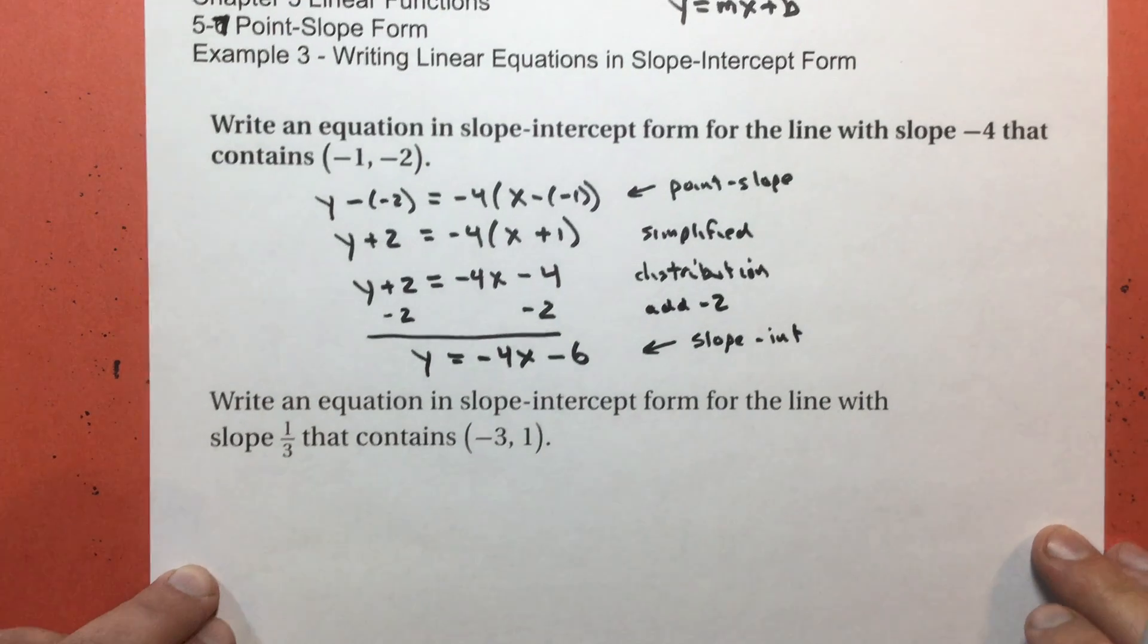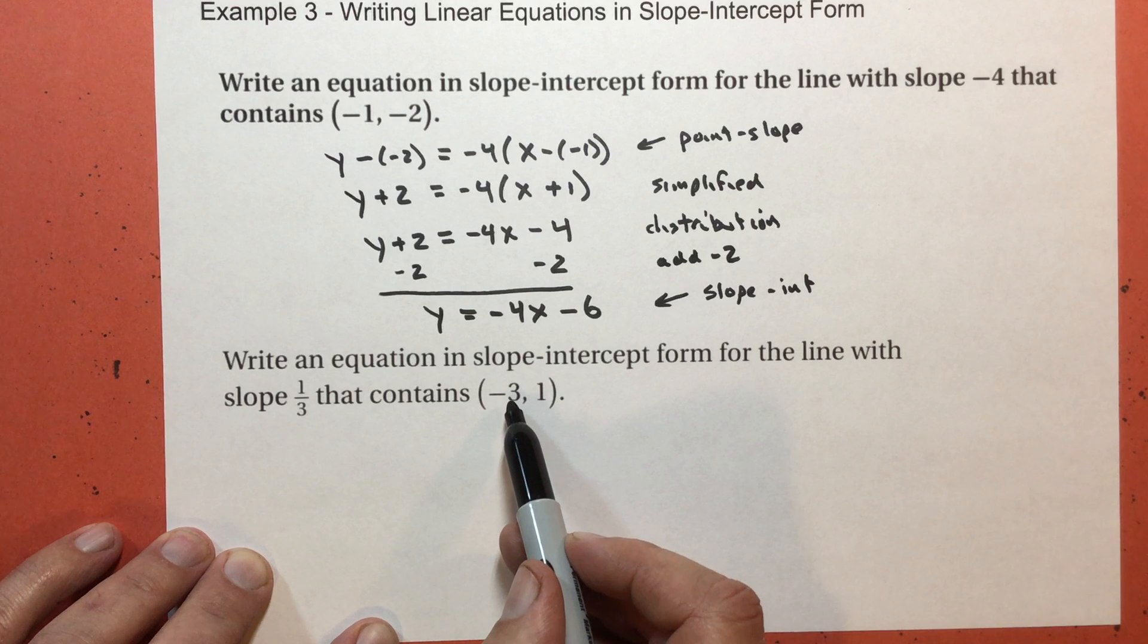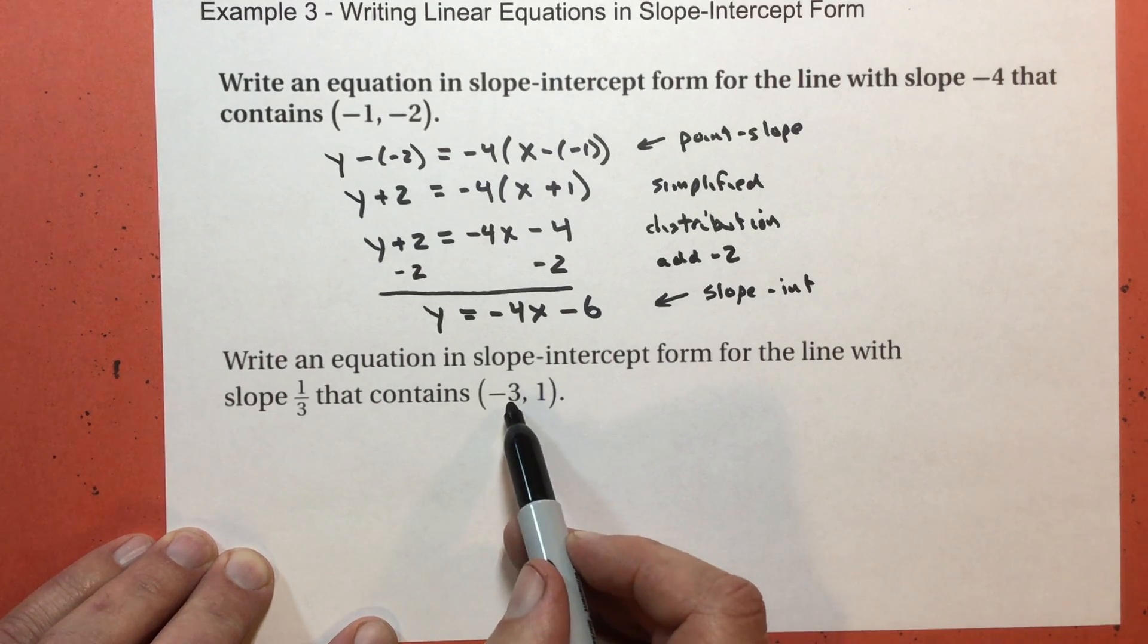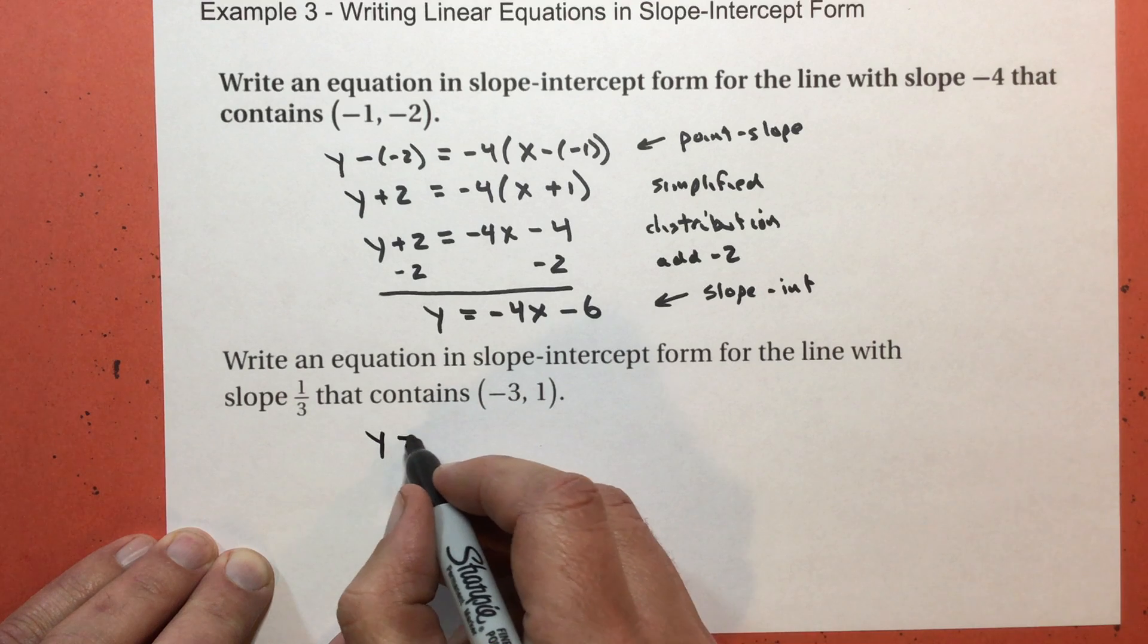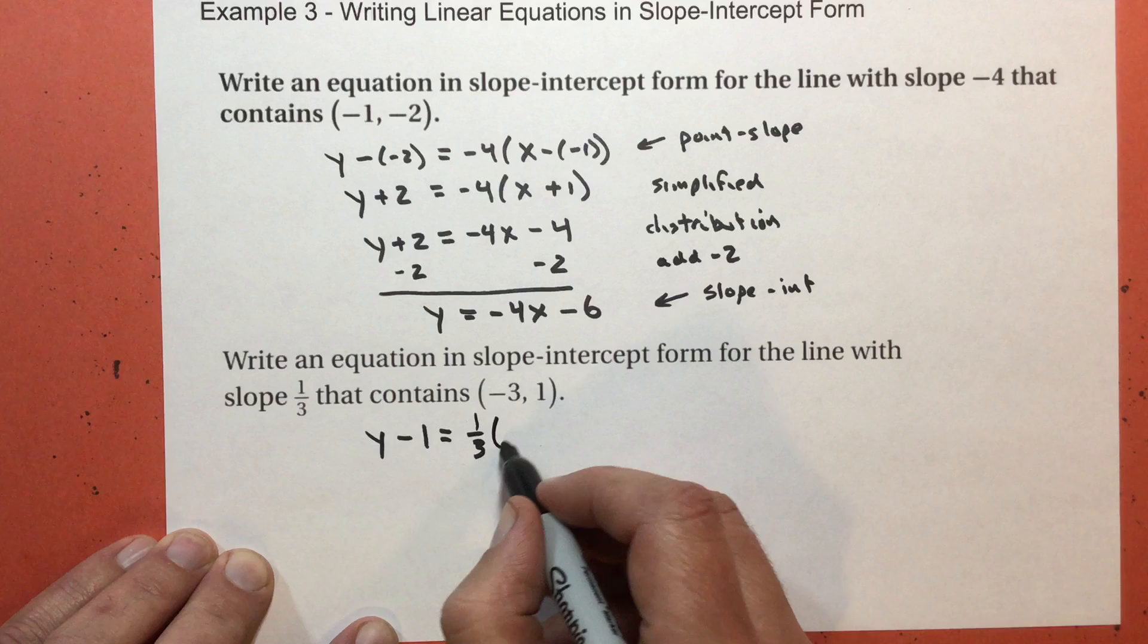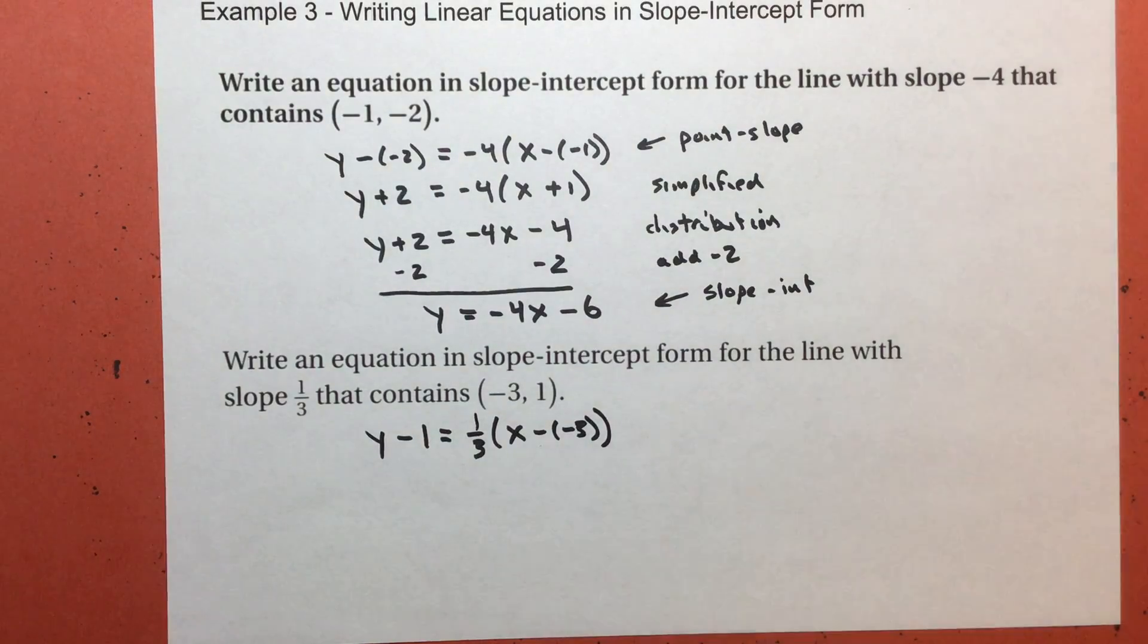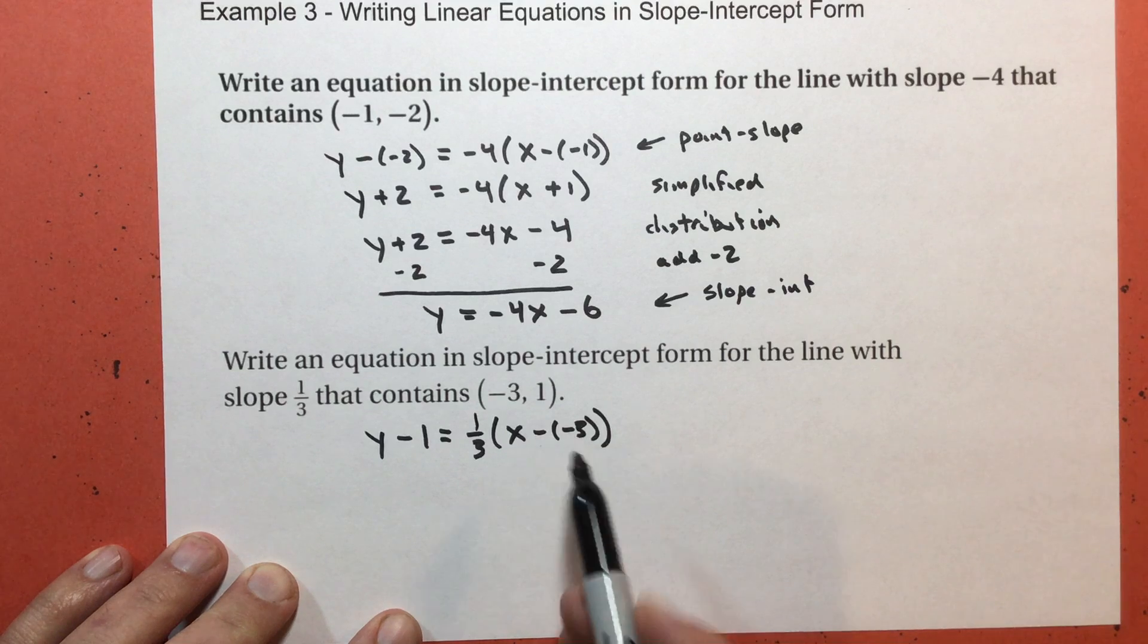Let's try the other one. So, my slope is 1 third. The x of my point, which is my only x, but I say x sub 1, is negative 3. And my y value is 1. So, I'm going to write y subtract 1 equals 1 third times x subtract negative 3. Again, that's point slope form.